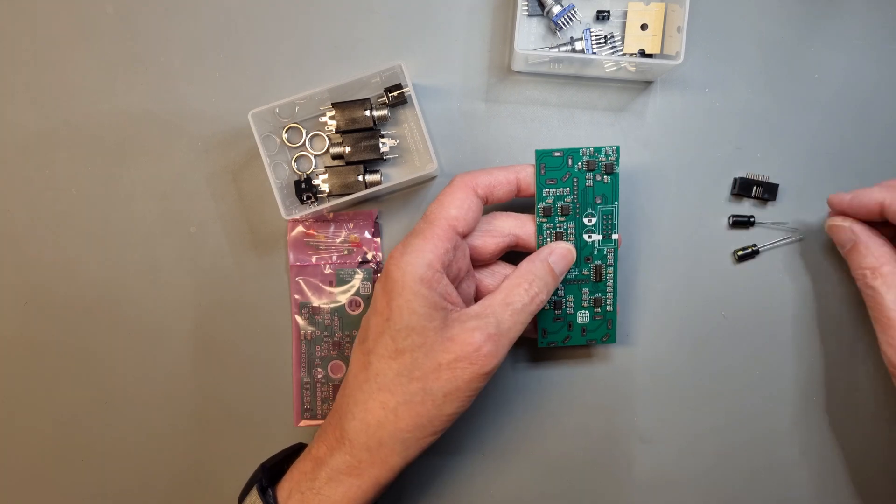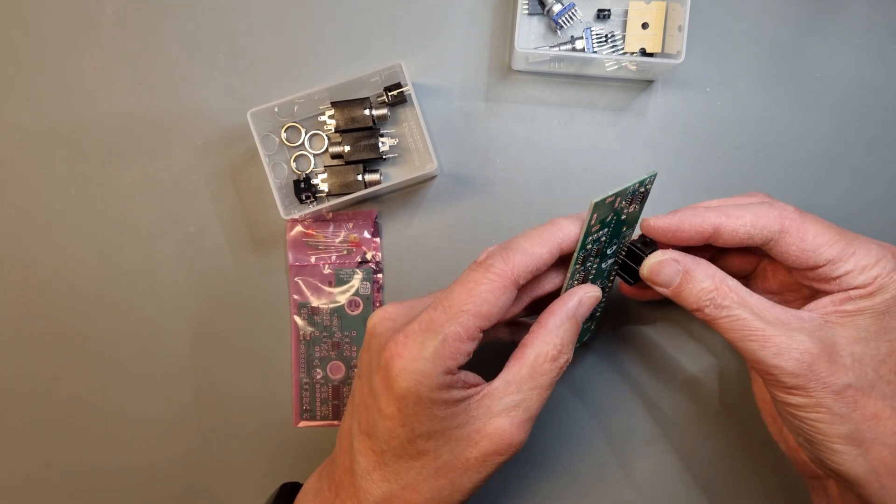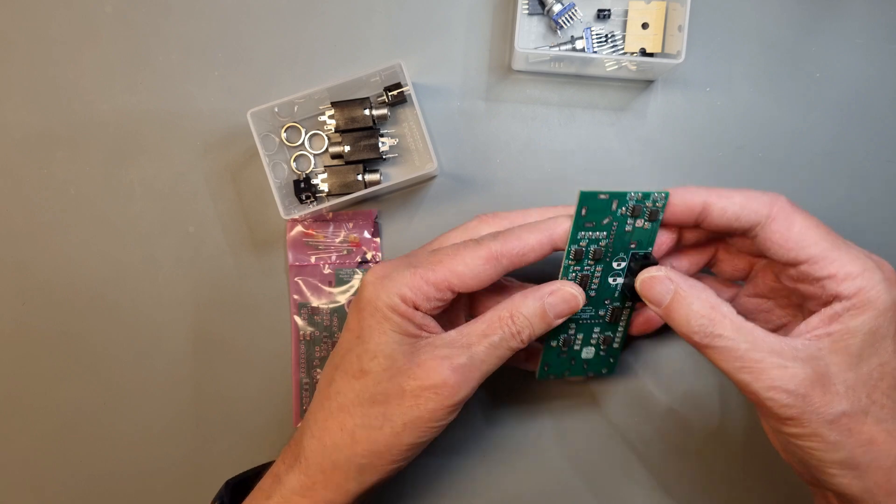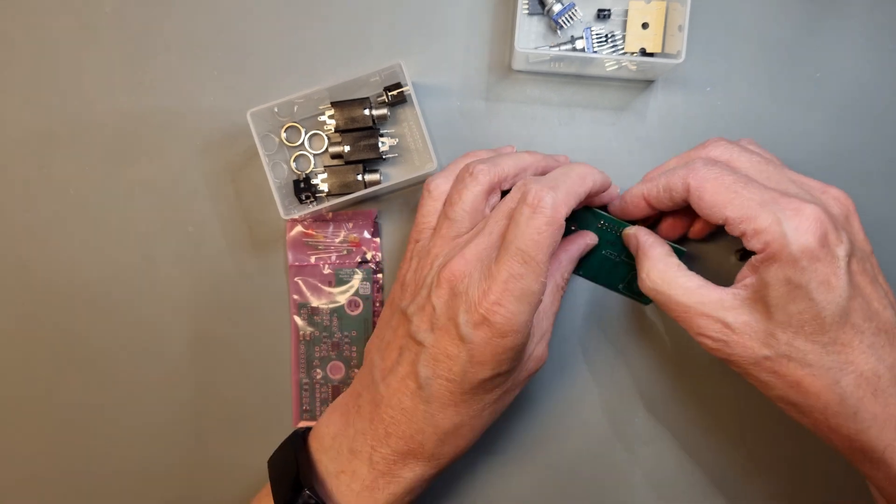But let's start with the power connector. Follow the marking on the PCB to mount it the right way. Pin 1 should go on the same side as the white stripe on the PCB.